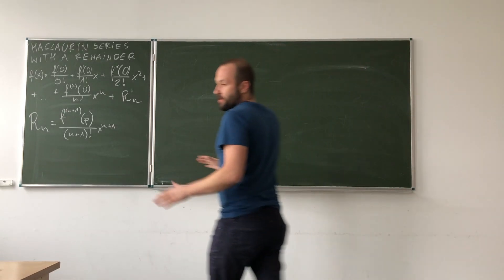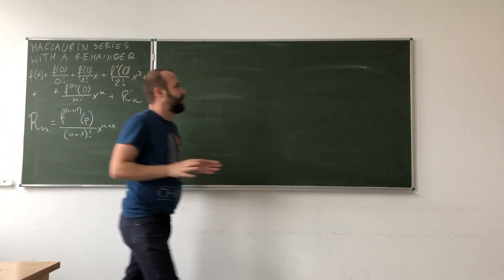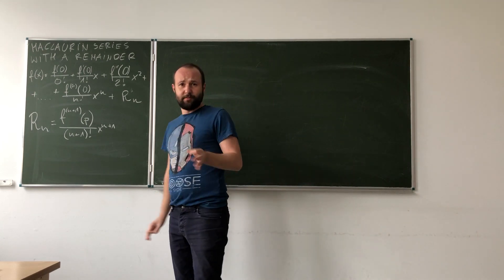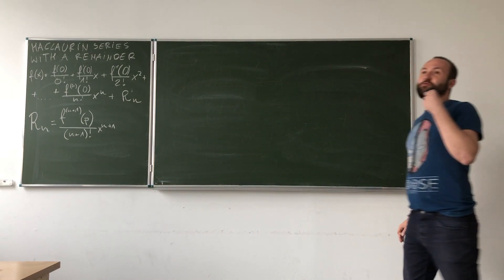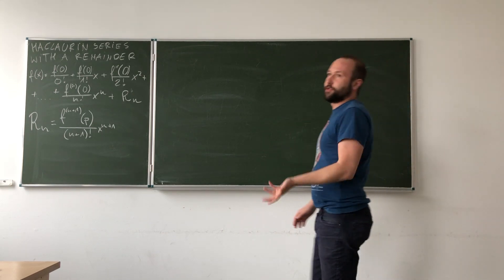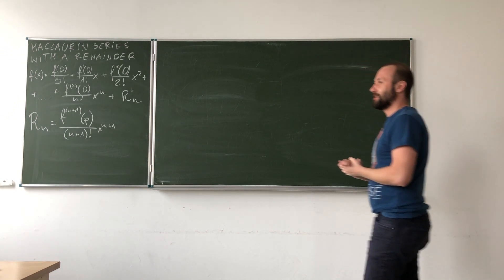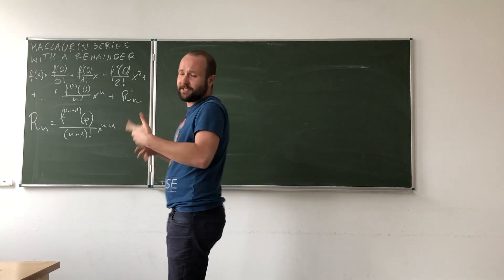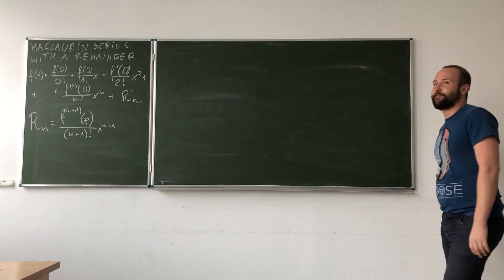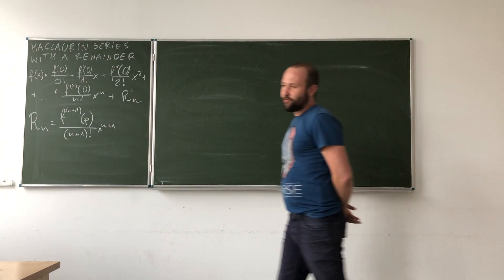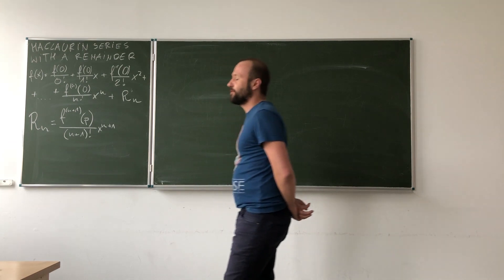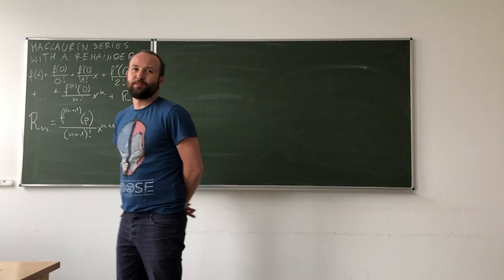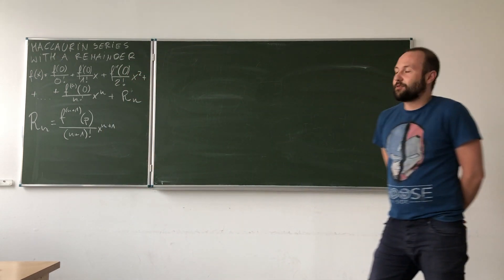Hi again! In this video we will learn how we can calculate the exact value of the e-number to any decimal place we want. Of course, the more places after the decimal point, the more work we will have to put into this. But it's always possible. What I want you to remember from this is the algorithm that works behind this calculation — and this is the same algorithm that calculators are using.